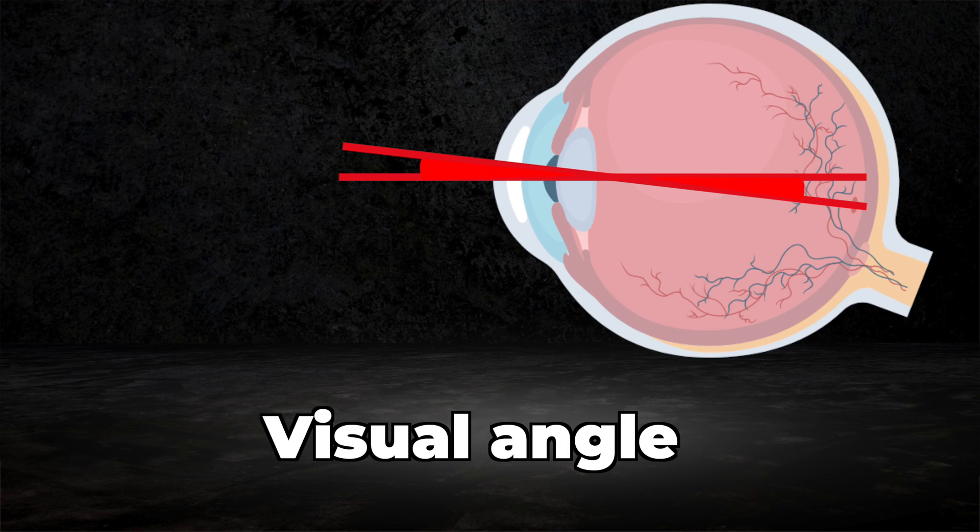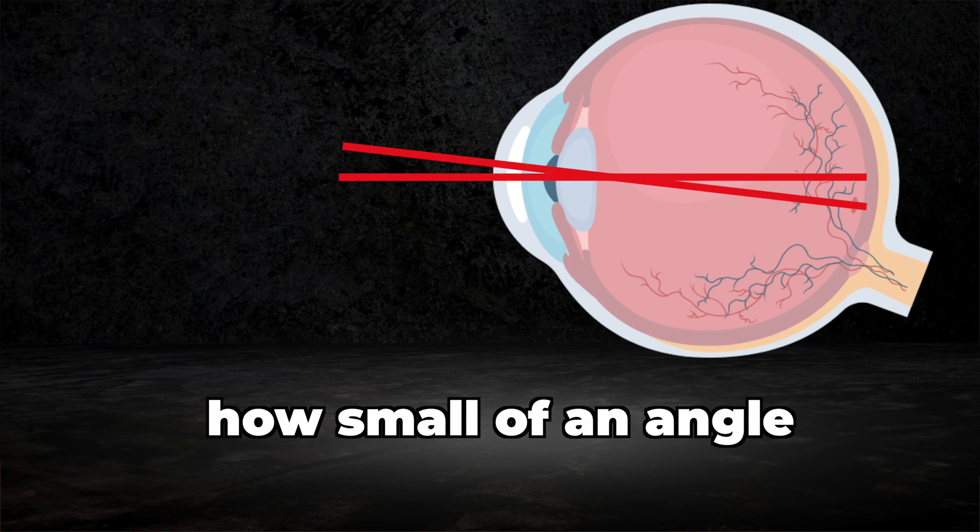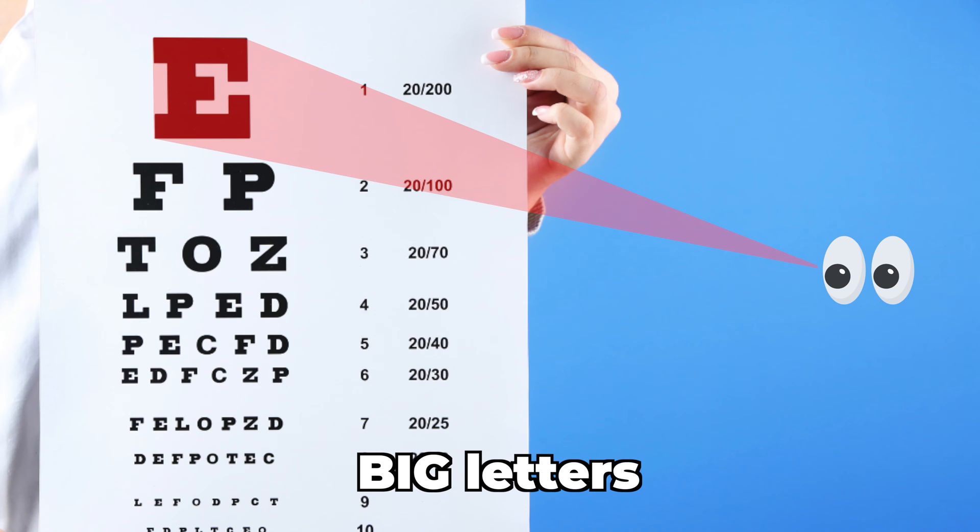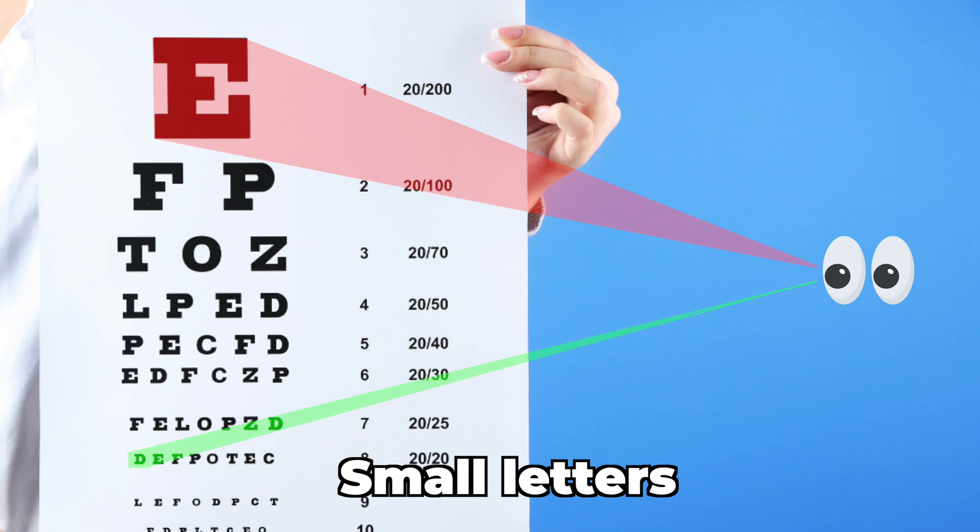We must measure the visual angle. How small of an angle can our eyes resolve? On a vision chart, big letters take up a large chunk of your visual angle, whereas small letters take up a small amount.